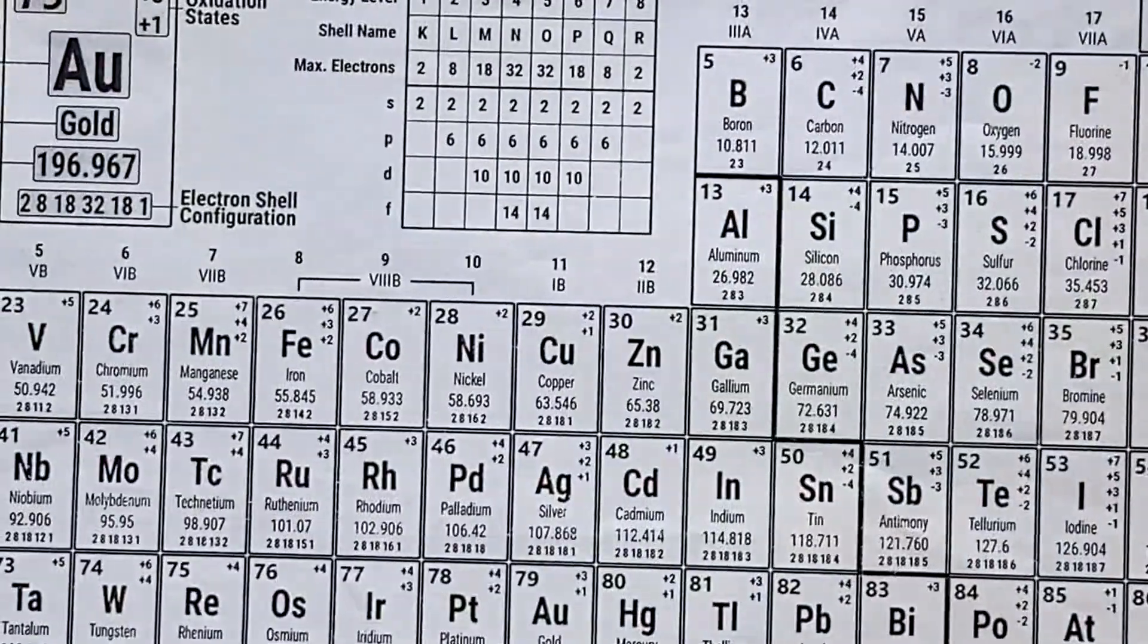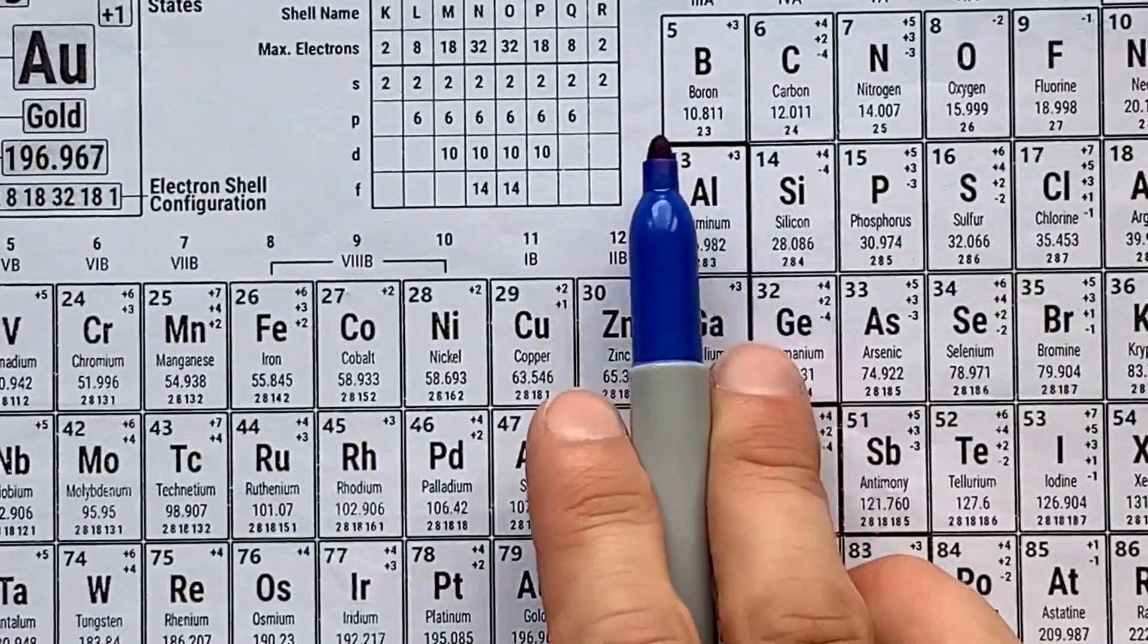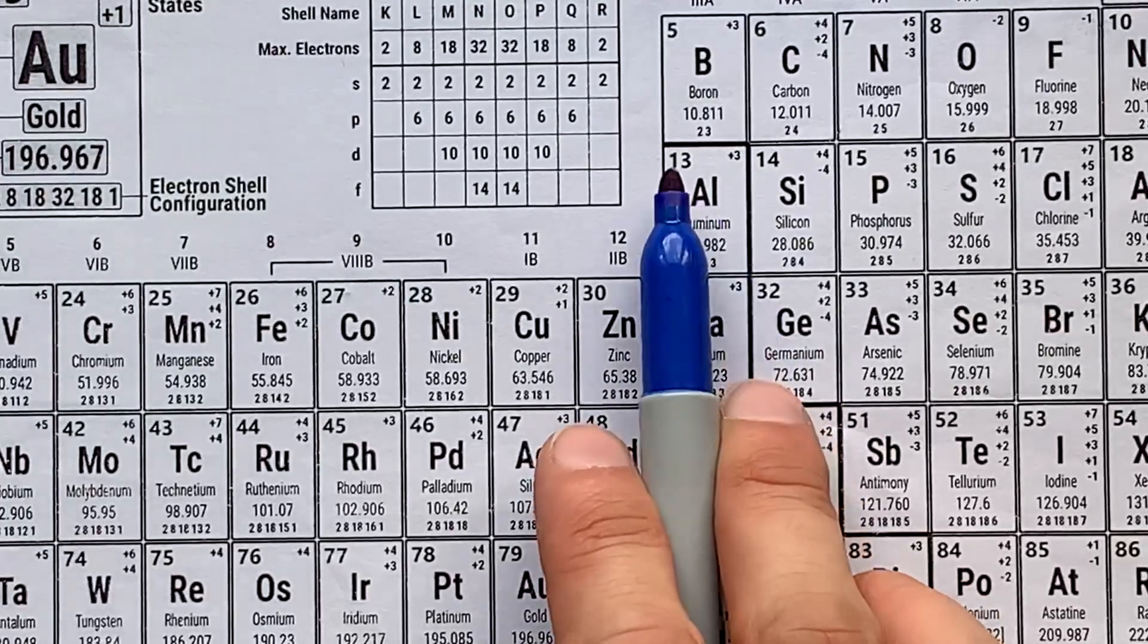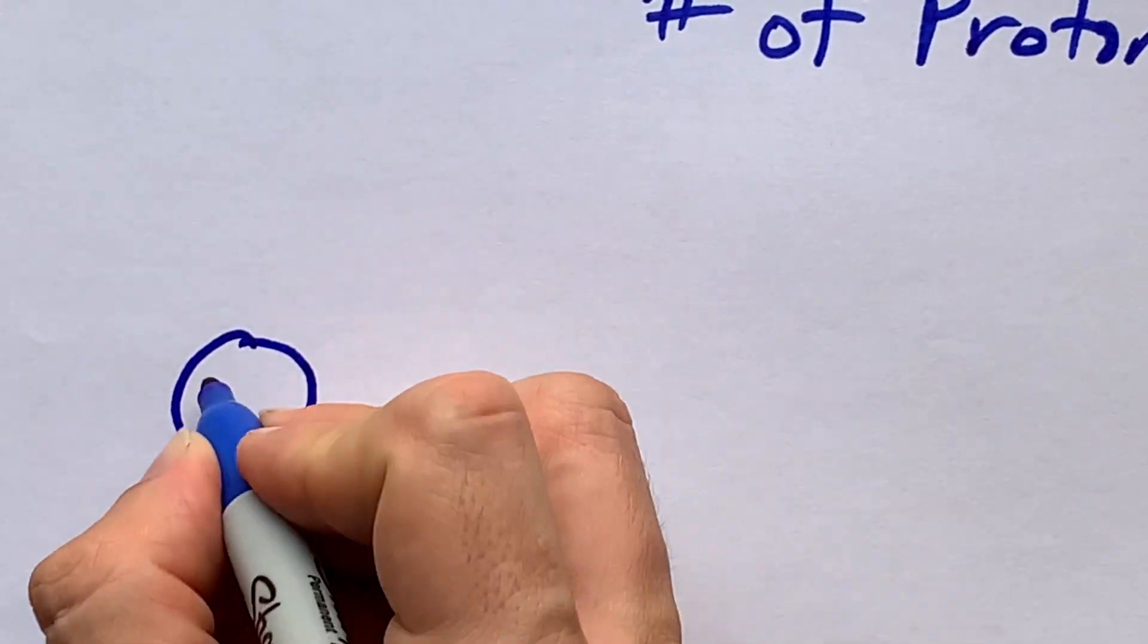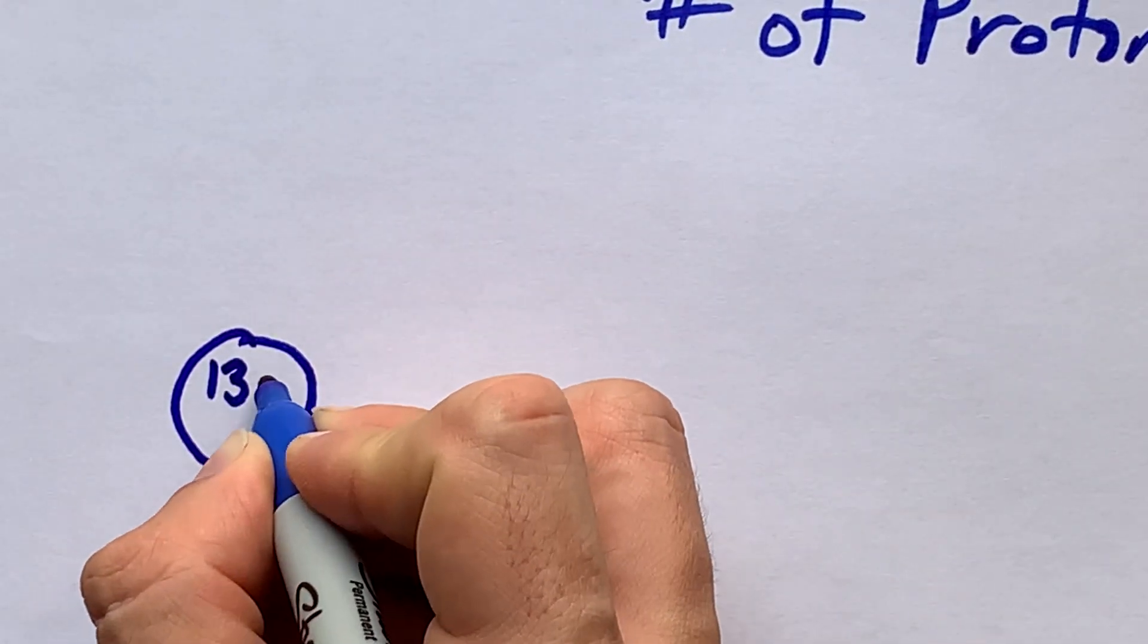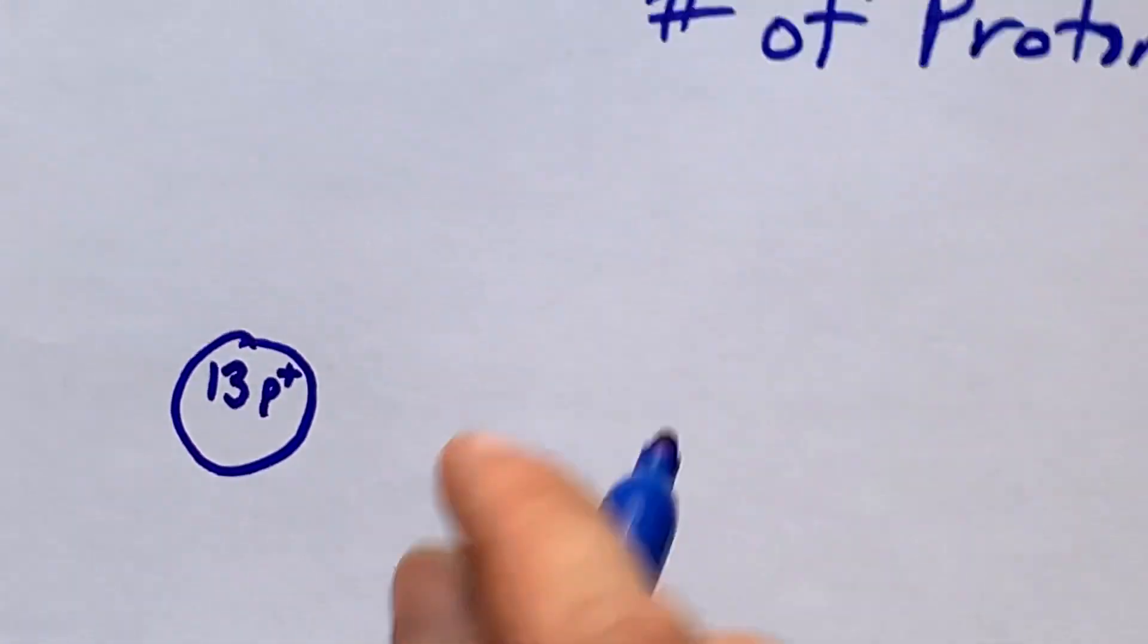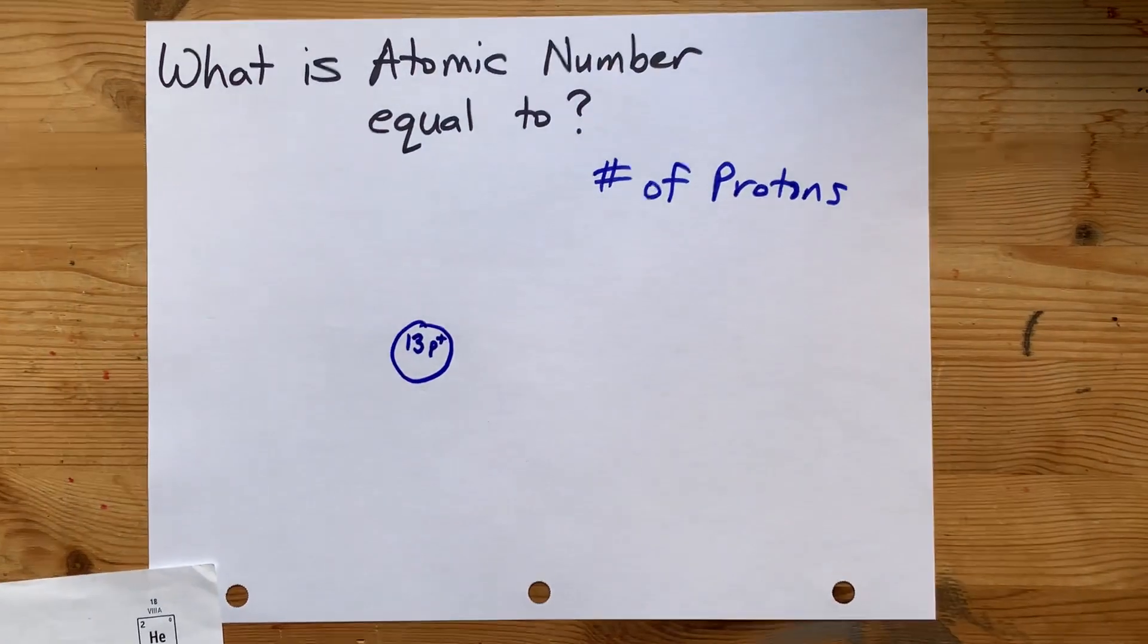Let's use aluminum as an example here. If you look at the periodic table, aluminum is element number 13. What that means is that in an atom of aluminum, you're going to have 13 protons. Those are little tiny subatomic particles that have a charge of plus one.